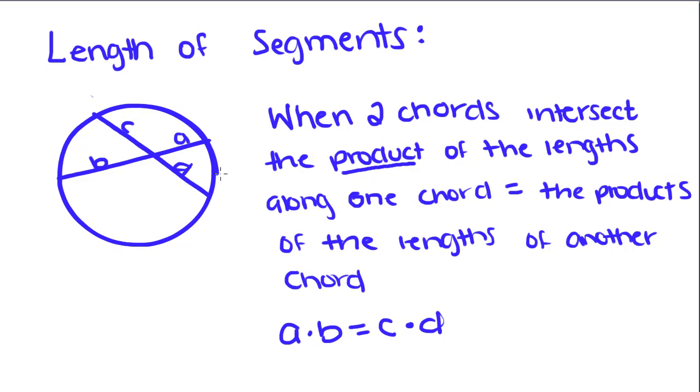If you remember, multiplication is commutative, so I can multiply in any order and I'll still get the same answer as long as I multiply the right parts together. I want part of one chord times part of another chord equals part of one chord times part of another chord.